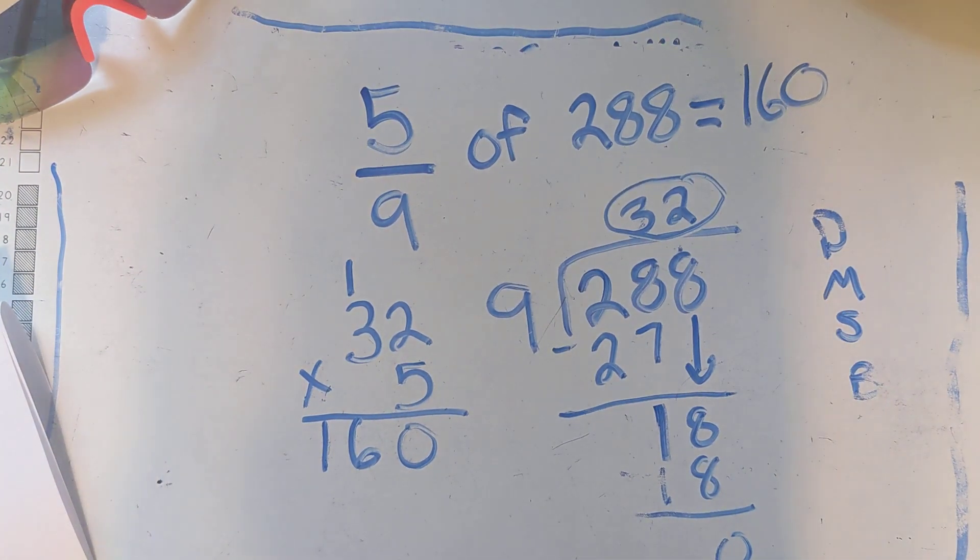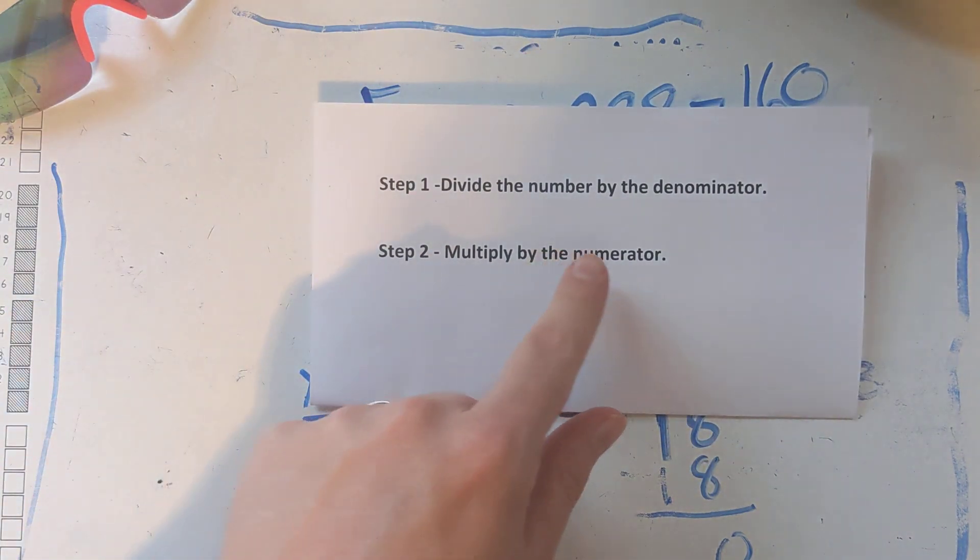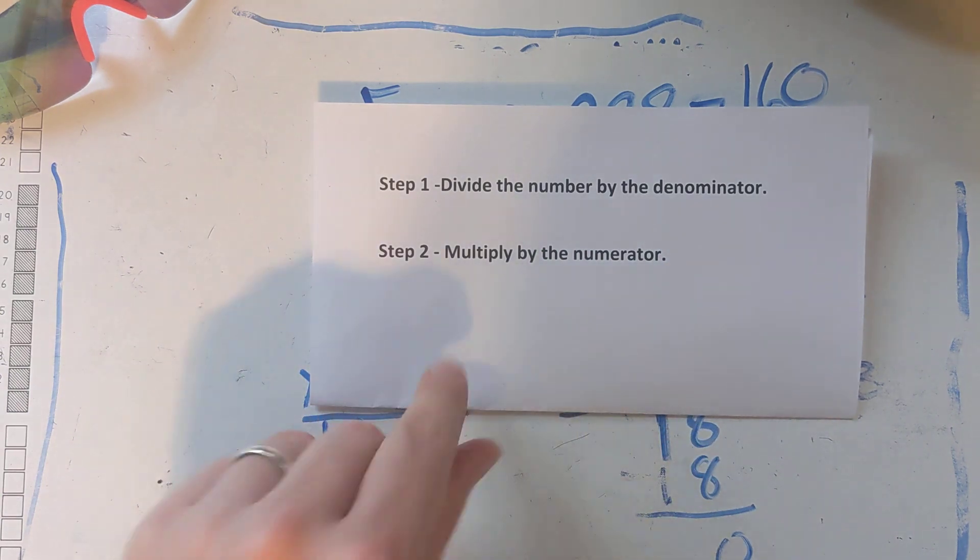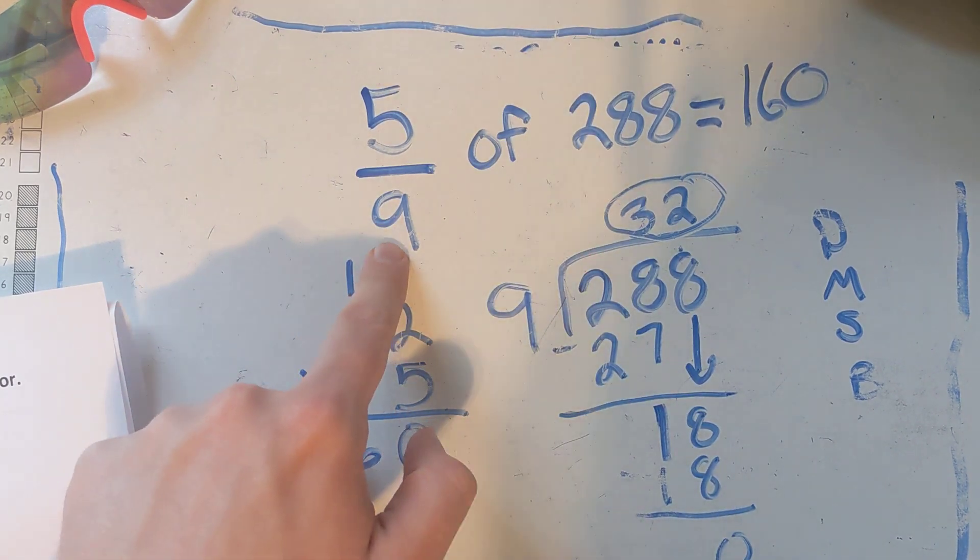So that's the much easier way to find the fraction of a whole number: just divide the whole number by the denominator, then multiply by the numerator. So I just divided 288 by my denominator, which is 9, got 32, multiply it by 5...